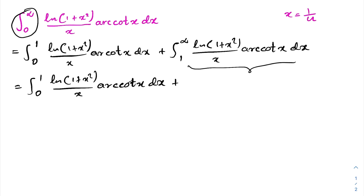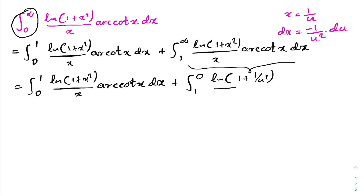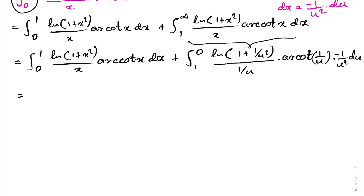With the substitution x = 1/u, we differentiate to get dx = −1/u² du. We change the limits: when x = 1, u = 1; when x → ∞, u → 0. Substituting, the integrand becomes ln(1 + 1/u²) over (1/u) times arccotangent of (1/u), times −1/u² du.